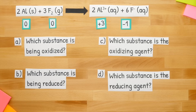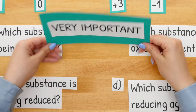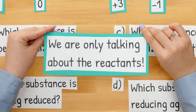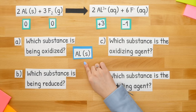Whenever you're asked which substance is being oxidized, reduced, or what's the oxidizing agent or reducing agent — this is very important — we are only talking about the reactants. Our first question asks which substance is being oxidized. So now that you know we're only looking at the reactants, we focus on the reactant involved in oxidation. That substance being oxidized is aluminum in its solid state.